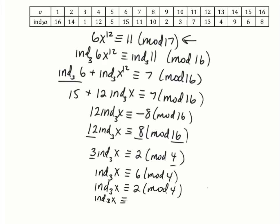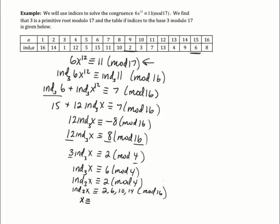Since we divided through by 4, there are 4 solutions mod 16. The index of x is 2, 6, 10, or 14. Looking up those index values in the table: if the index of x is 2, x is 9; if the index is 6, x is 15; if the index is 10, x is 8; and if the index is 14, x is 2. Those are the 4 solutions mod 17.